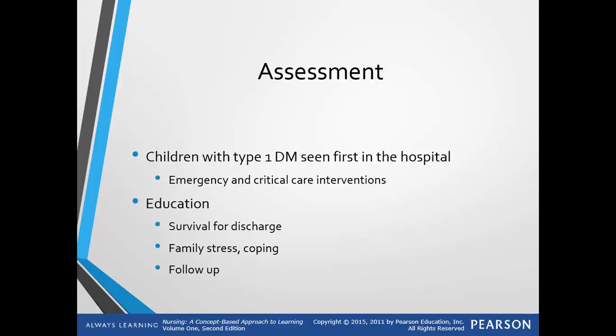Rapidly decreasing blood sugar causes cerebral complications and neurologic changes. Once acidosis is corrected and blood sugar is improved, the insulin drip is tapered off and subcutaneous insulin is started. Food will be introduced when the child is alert and blood glucose levels have stabilized. Once the child has stabilized, education will begin and they will cover survival skills for discharge, family stress and coping, and follow-up plans.